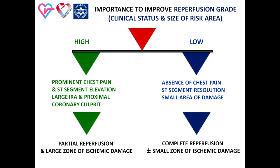In the subset of patients with some level of reperfusion — from partial to complete — we must evaluate the level of benefit, the importance of improving the reperfusion state, and the size of the myocardial area at risk. To this purpose, we define grades of importance. High importance refers to patients with chest pain and ST segment elevation, with the lesion in the proximal part of the coronary arteries, a large zone of ischemic damage, and angiographic evidence of incomplete reperfusion.